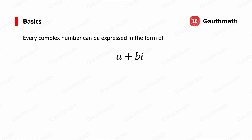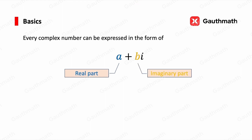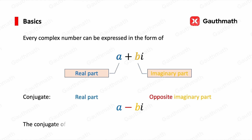Every complex number can be expressed in the form a plus bi, where a is called the real part and b is the imaginary part. If we keep the same real part a and take the opposite imaginary part, the complex number becomes a minus bi, and that is the conjugate. So the conjugate of a plus bi is a minus bi.